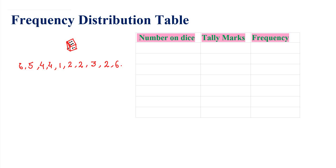We rolled the dice 10 times and got: 6, 5, 4, 4, 1, 2, 2, 3, 2, 6. Now, seeing this result as given, we can't figure out which numbers appeared how many times. So now we need to find out how many times each number came. Thus we prepare a following table, where we represent the number of occurrences of any particular number by the corresponding number of tally marks.